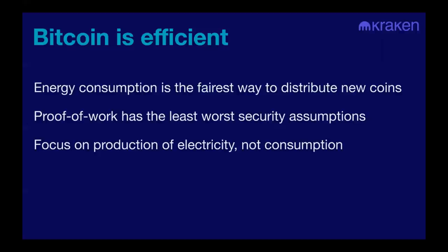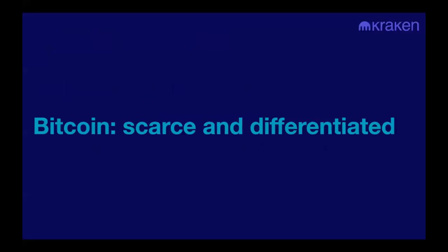Forcing people to use less electricity is antithetical to liberal democracy and civilization — it necessarily requires a totalitarian electricity consumption surveillance state. In conclusion, Bitcoin is scarce and differentiated, and ultimately that's why the halving is interesting: we're going to have a supply shock in a system where demand is extremely robust. I'll leave it to your imagination as to what this is going to do for Bitcoin's price over the coming years. Personally — and this is not the view of Kraken, my employer — my personal view is that I'm bullish on Bitcoin.